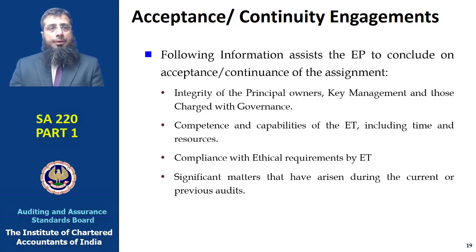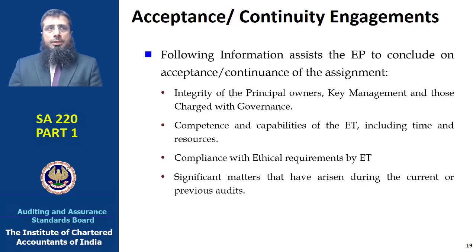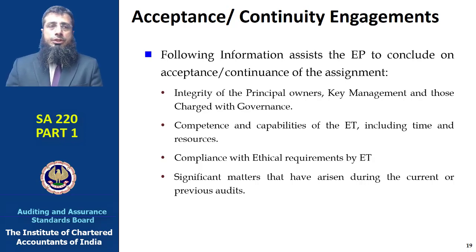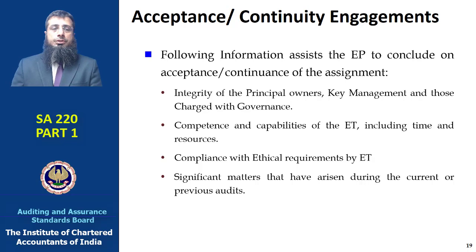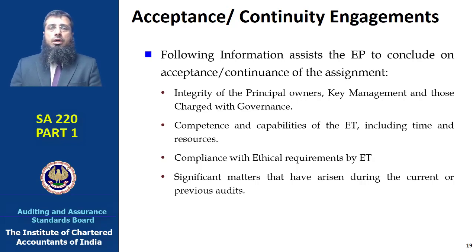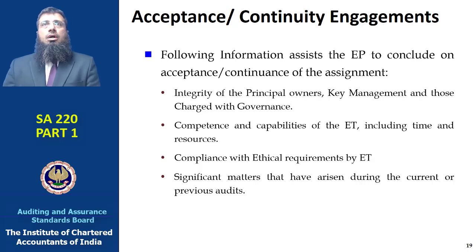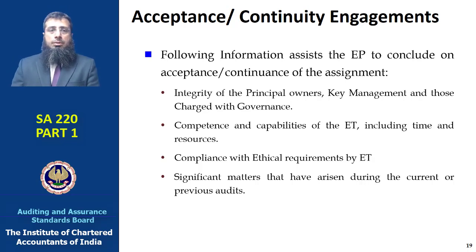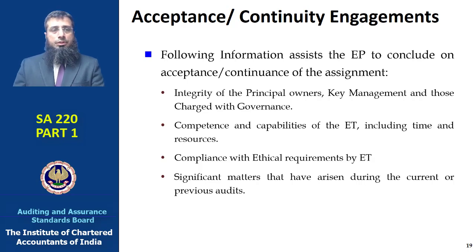The standard provides certain indicators — not an exhaustive list — for evaluating whether to accept or continue an assignment. These include: the competence and capabilities of the engagement team including time and resources, as practitioners sometimes take on assignments without adequate qualified resources; compliance with ethical requirements by the engagement team; and significant matters that have arisen during the current or previous audit, such as indications of a previous auditor resigning or information not being provided, which could threaten independence or the reason to continue the assignment.